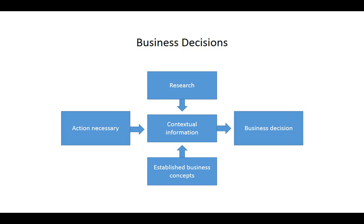There are specific sources of information for different types of needs that people in business use on a regular basis. There are reports that summarize trends within specific industries, a wealth of information available on companies that trade stock publicly, and even business directories with information on smaller private companies. People in business read specialized publications to keep up to date on best practices and innovations. All of this is available through databases that the library provides access to. These databases don't contain all the answers; rather, they provide you with information to make the best decision possible.